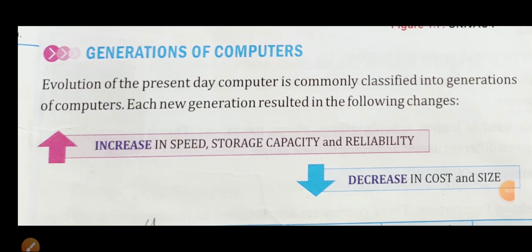Now let us learn about generations of computer. The evolution of the present-day computer is classified into generations. Each new generation resulted in: increase in speed, increase in storage capacity, increase in reliability, and decrease in cost and size.